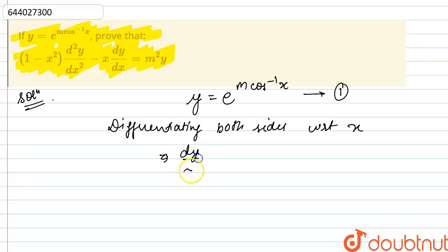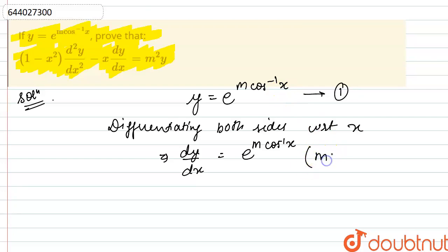Differentiating, dy/dx equals e raised to the power m into cos inverse x, multiplied by m — since m is a constant — times the differentiation of cos inverse x, which is minus 1 over root of 1 minus x square.